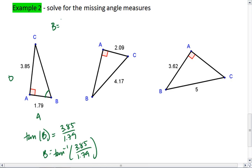We can use our calculators and find that B, let's see, tan inverse or arc tan of 3.85 divided by 1.79, comes out to be 65.06 degrees.